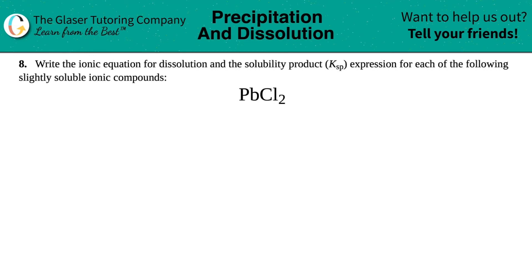Number eight: write the ionic equation for dissolution and the solubility product (Ksp) expression for each of the following slightly soluble ionic compounds. We're starting off with PbCl2, so the first thing we have to do is write out the ionic equation for dissolution. Dissolution means that we're just going to be